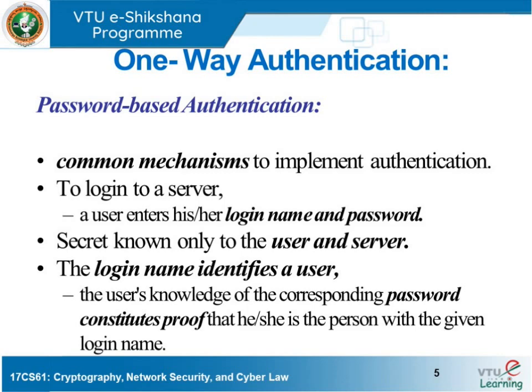If you are trying to physically prove your identity, you use an ID card such as a passport or an Aadhaar card. There are two types of authentication. The first type is one-way authentication. In a client-server communication, the client tries to prove himself to the server by providing login credentials and password. If the server is able to verify those credentials, it authenticates the client.